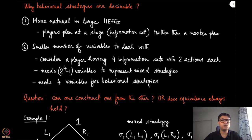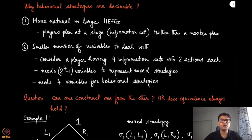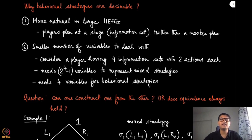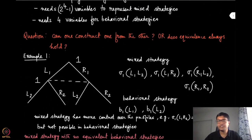The question becomes moot if we have an equivalence for both types of strategies — if it was always possible to find a behavioral strategy for any mixed strategy in any IAEFG, we could equivalently talk about either. But in this module we are going to discuss that it is not always true that you can construct one from the other for any kind of game. Let us start with the first example.